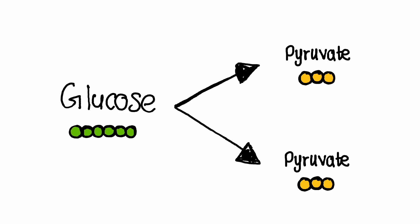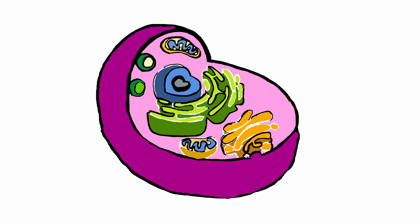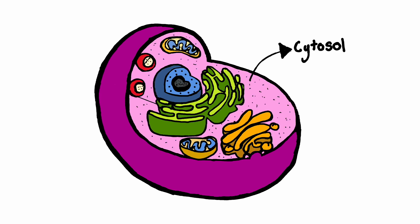Glycolysis is a 10-step process that breaks down glucose, a 6-carbon sugar, into two molecules of pyruvate, which contains 3 carbons each. It occurs in the cytoplasm of cells and is the first stage of cellular respiration. This produces energy for the cell.